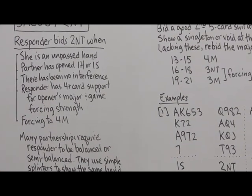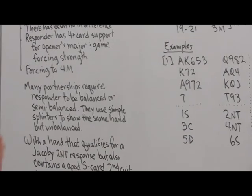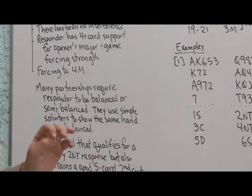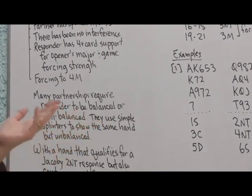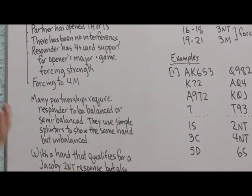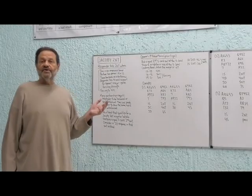Many partnerships require responder to be balanced or semi-balanced. They use simple splinters to show the same hands when they're unbalanced. So if I have four-card support and game-forcing strength in either a balanced or unbalanced hand, the Jacoby 2 No Trump response is available to me. But when I'm unbalanced, the same hand, four-card support and game-forcing strength, we'll consider a simple splinter, which is a double jump shift into the short suit.